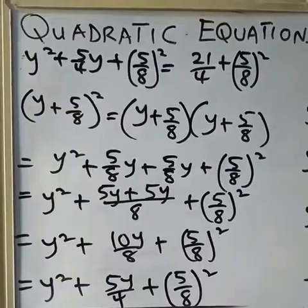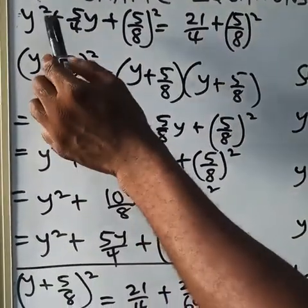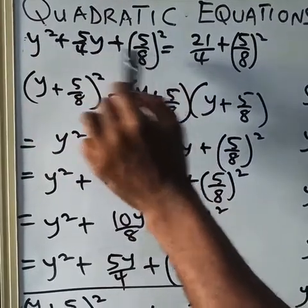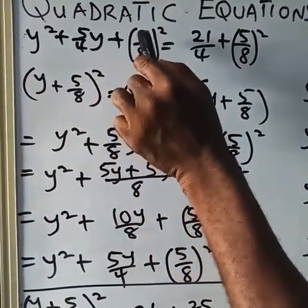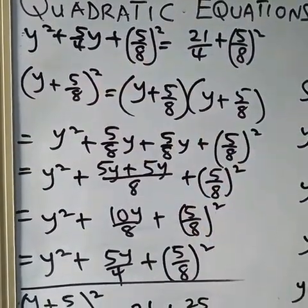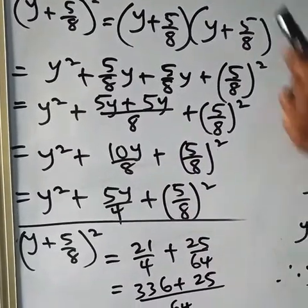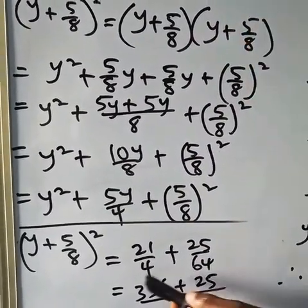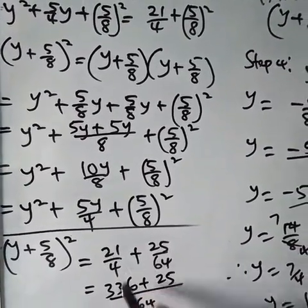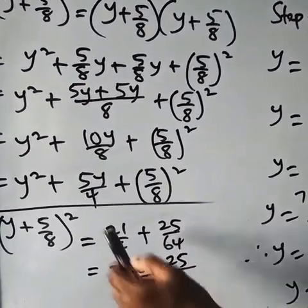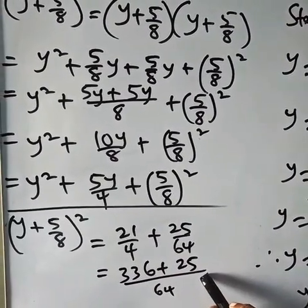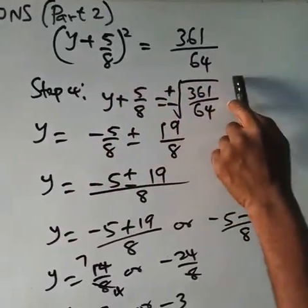Compare the two expressions and you can see they are the same. Whenever you have a perfect square, just look at the two terms that are squared and pick them. If you had minus 5 over 8, it would become y minus 5 over 8, all squared. Continuing on the right-hand side: 21 over 4 plus 25 over 64. Finding the LCM of 4 and 64 gives 64; 16 times 21 is 336, plus 25, giving the result over 64.